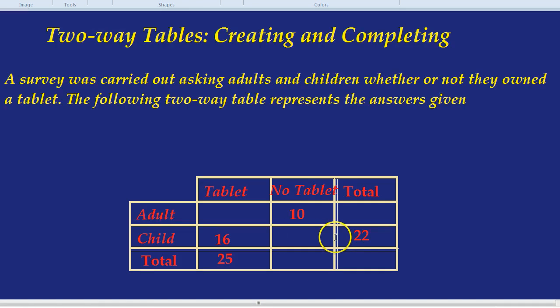How might we do that? If you notice, there's 22 children in total. 16 children had tablets. How many do you reckon did not have tablets? We could do 22 take away 16, which is indeed 6. Can you spot another box that we could fill out? Well, there's 10 adults who don't have a tablet. And 6 children who do not have a tablet. So in total, that's 16 people who do not have a tablet.